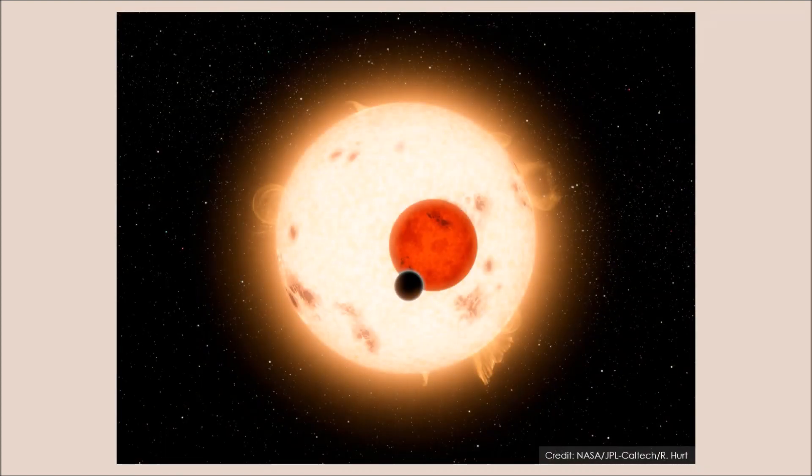The way that Kepler-16b was discovered is quite fascinating. Let me explain using this image. In it, there's a star, a smaller star, and a planet that overlaps both of them.